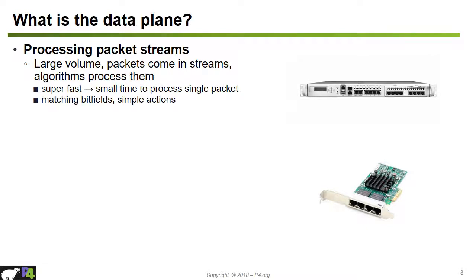So the algorithms which can be executed on a per-packet basis need to be really simple in order to run super fast. Some examples of what these algorithms do: they match on some bit fields and perform simple actions on the packets — for example dropping packets, forwarding packets to a given port, or encapsulating them in another packet.